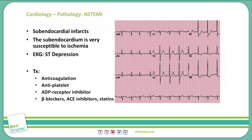Treatment for an NSTEMI includes many different medications. First and foremost, we will anticoagulate with something like heparin. We will also give antiplatelet therapy like aspirin — and this will be a full dose aspirin, which is about 325 mg, not the baby aspirin 81 mg.